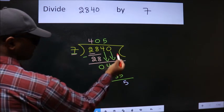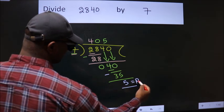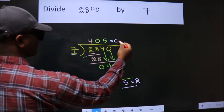No more numbers to bring it down. So we stop here. This is our remainder. This is our quotient.